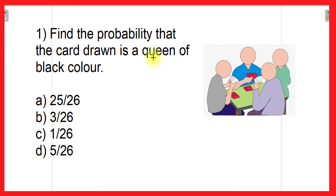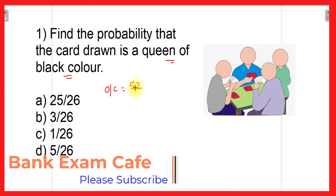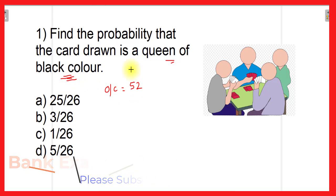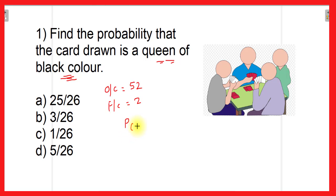The first question on the screen is: Find the probability that the card drawn is a queen of black color. As we know there are 52 cards, so the total outcome will be 52. There are two black queens in 52 cards, therefore the favorable outcome will be 2. The probability of getting a black color queen equals favorable outcome divided by total outcome, which is 2/52 = 1/26. Therefore, option C is the correct answer.